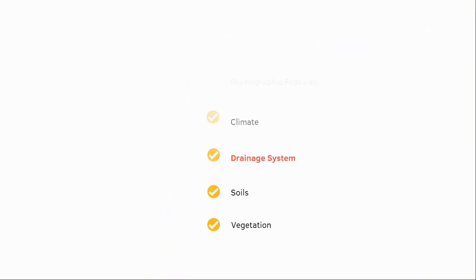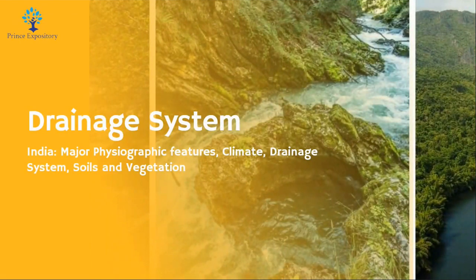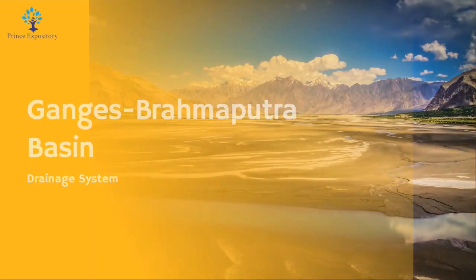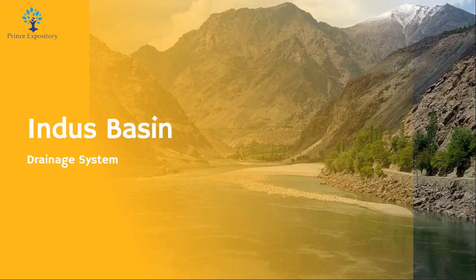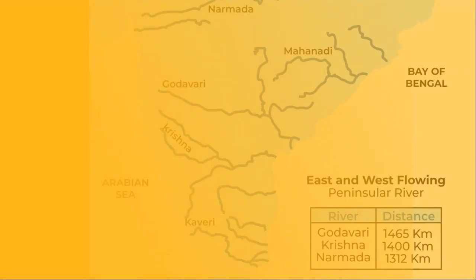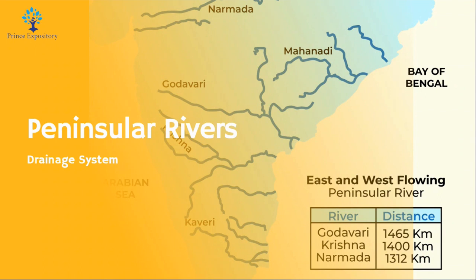The drainage system includes the Ganges-Brahmaputra Basin, Indus Basin, and Peninsular Rivers. The Ganges and Brahmaputra rivers, along with their tributaries, form a vast and fertile basin in the northern and eastern parts of India. The Indus River, originating in Tibet and flowing through Pakistan, is significant for the north-western region of India. Rivers like Godavari, Krishna, and Cauvery flow through the Deccan Plateau, contributing to the fertile soils in the region.